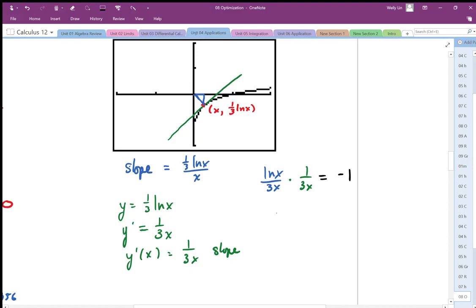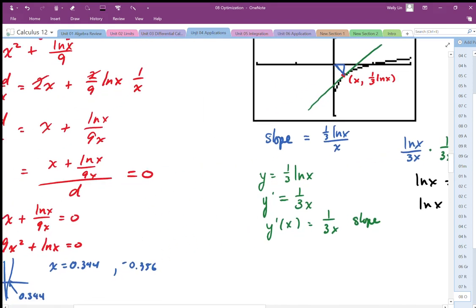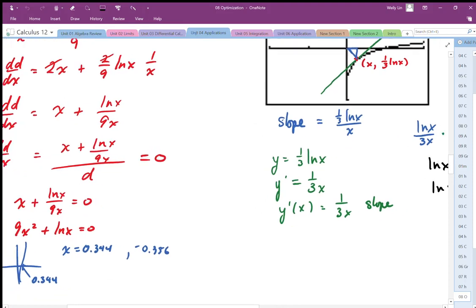So I end up with log x is equal to negative nine x squared. So I end up with log x plus nine x squared equal to zero. And again, I end up with the same equation that I ended up with over here, which I solve for by graphing.